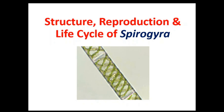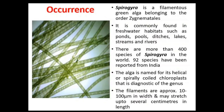Hello friends. In the previous lecture, we learnt about the range of thallus structure in algae — that is, the different types of thallus found in algae. The next part of your syllabus is the study of the life cycle of Spirogyra, which is from green algae, that is Chlorophyceae. Now the occurrence of Spirogyra.